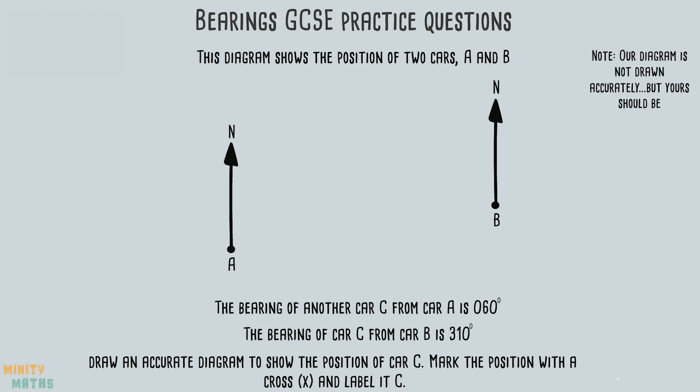Let's use the information given in the first sentence to draw a line from car A to where car C could be. First we should use our protractor to measure an angle of 60 degrees clockwise from the north line of car A. From this point draw a line and extend as far as you can. We know the car will be somewhere along this line but we can't be sure yet exactly what point on the line the car will be.